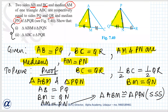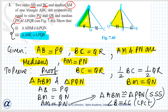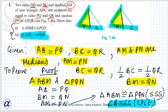By SSS congruence rule. So we can write by CPCT: angle B equals angle Q. We want to prove the next part also, so by CPCT we can use this angle so that we can prove these two triangles are also congruent.